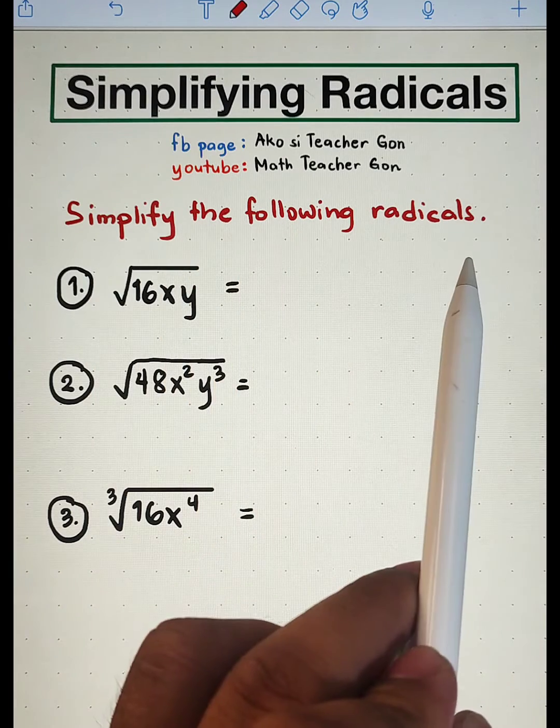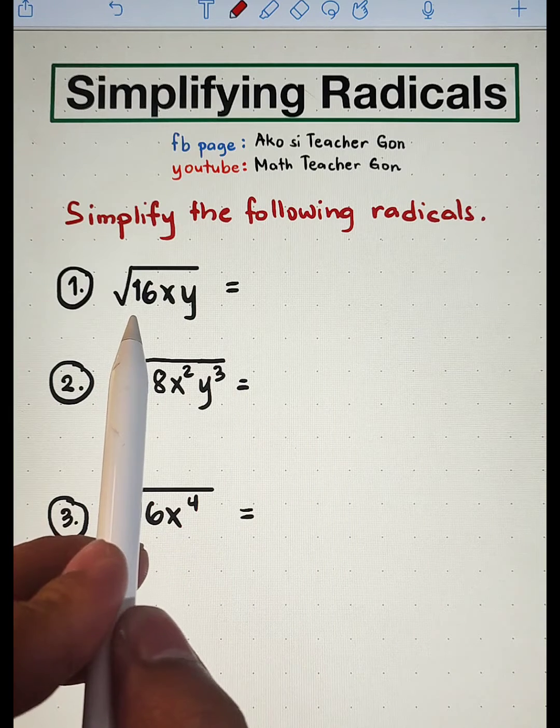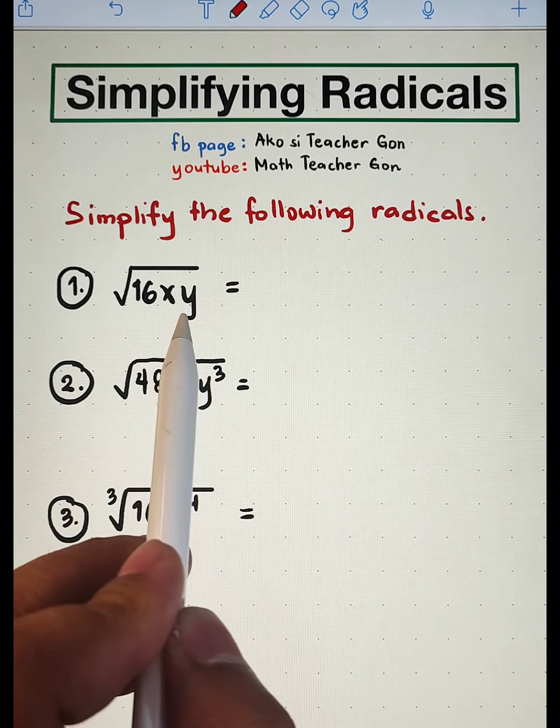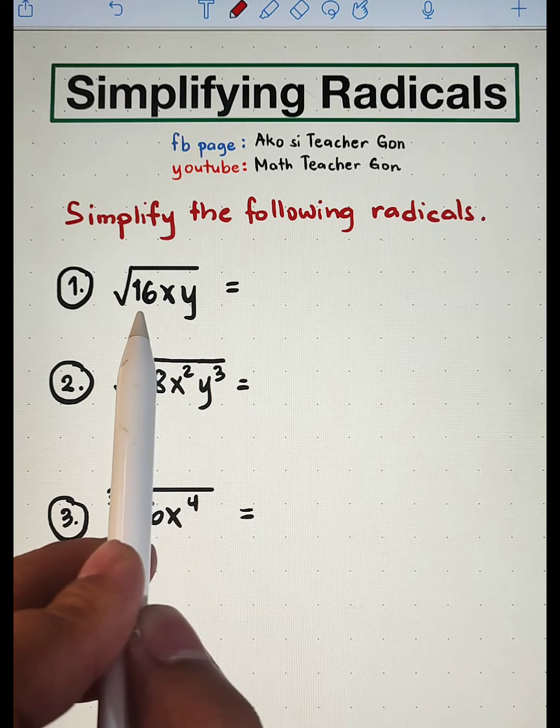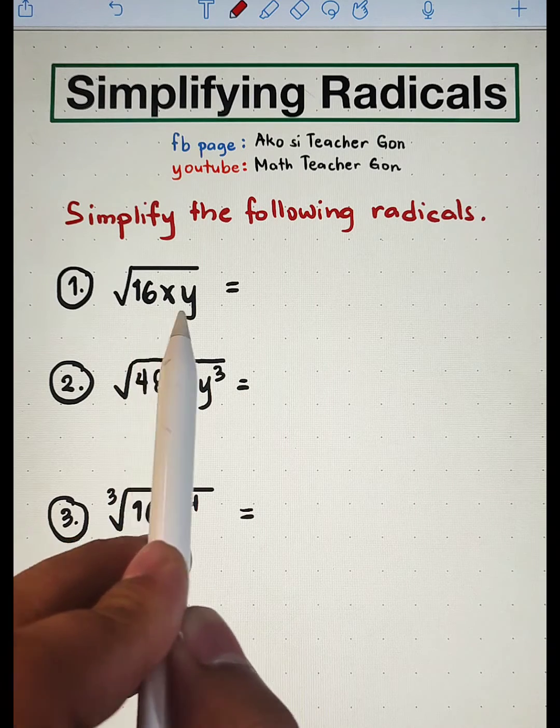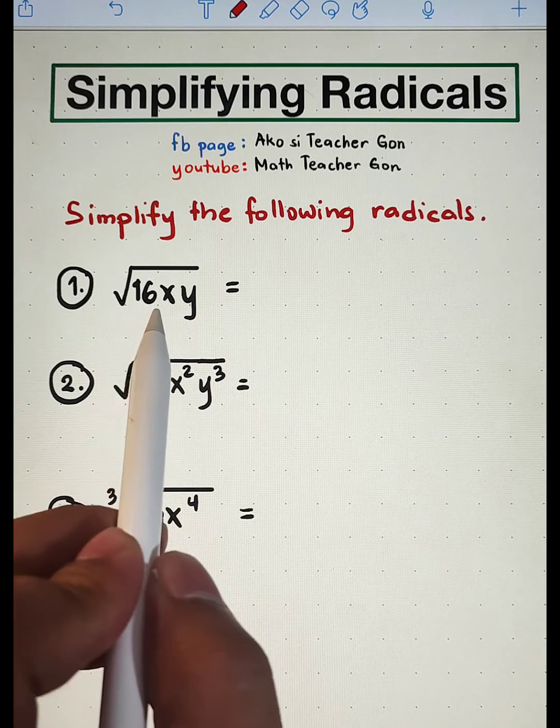Simplify the following radicals. In number one, we are given square root of 16xy. So in extracting this, we need to know whether the given radicand, or the expression inside the radical, is a perfect square.